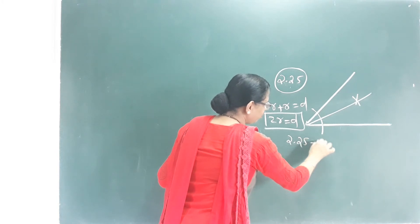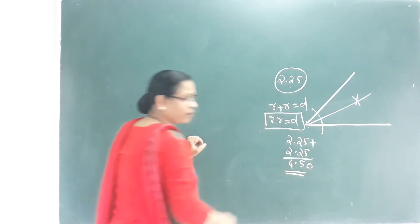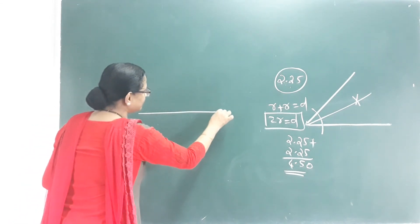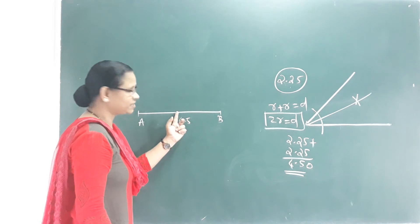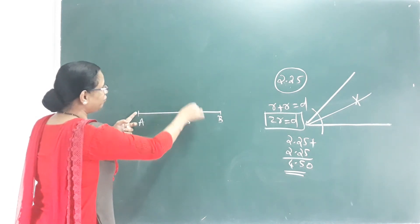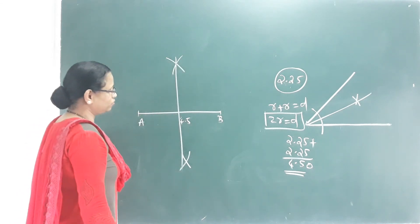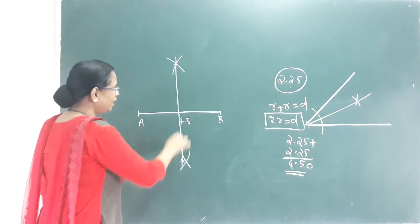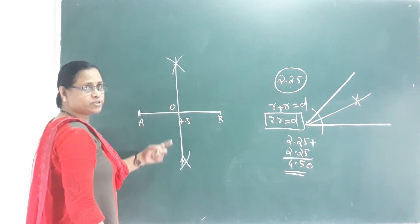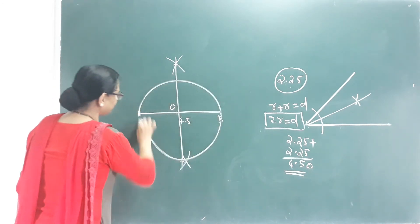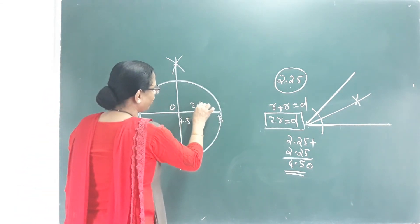That is 2.25 plus 2.25 — look at the two radii. The diameter is 4.5 cm. I am going to cut a line of 4.5 cm. This is 4.5 cm. This is the middle and perpendicular bisect. Here is 4.5 cm. The point is in the middle — this is the circle of the radius. This radius is equal here. I have a circle here. This circle has a radius of 2.25 cm.